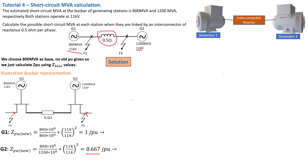We still have one thing to calculate — the per unit of the line. From generator 1 to generator 2, we have an interconnected line. Because it's a large system with very high potential short circuit current, that is why we included the reactor of reactance 0.5 ohm to limit the value to a safe level. Now we need to convert this reactor's reactance into a per unit value because it's an impedance. We consider that this 0.5 is the Z actual. The Z per unit of the line is Z actual divided by Z base, following the common per unit formula.